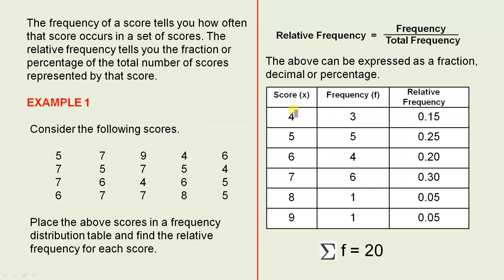Now the relative frequency of the score 4 will be 3 over 20. Now to express that as a decimal, it's 0.15.